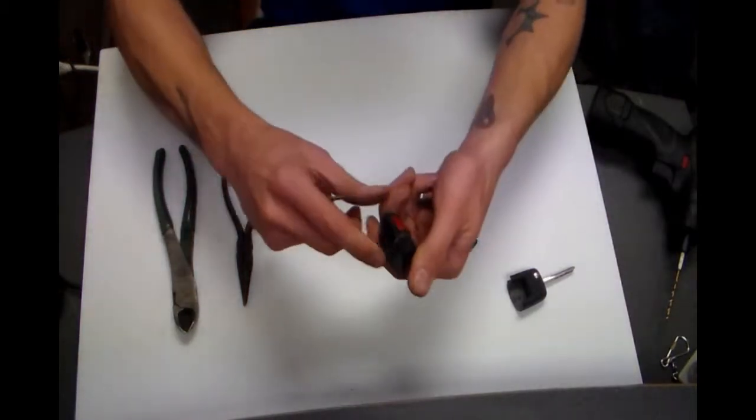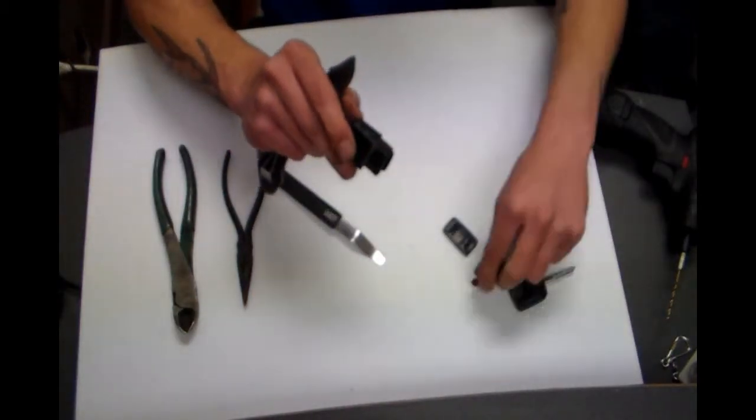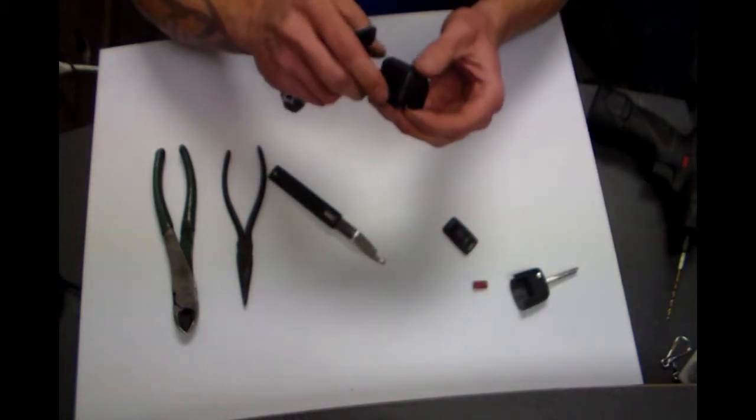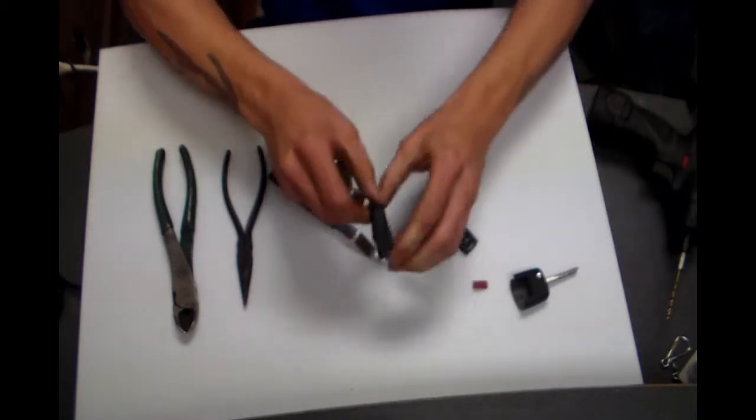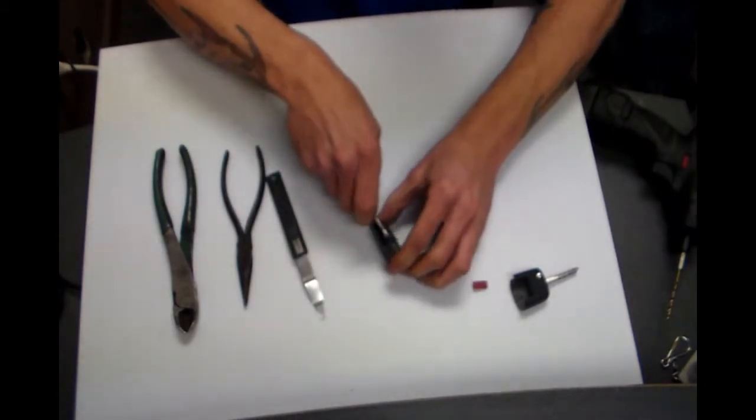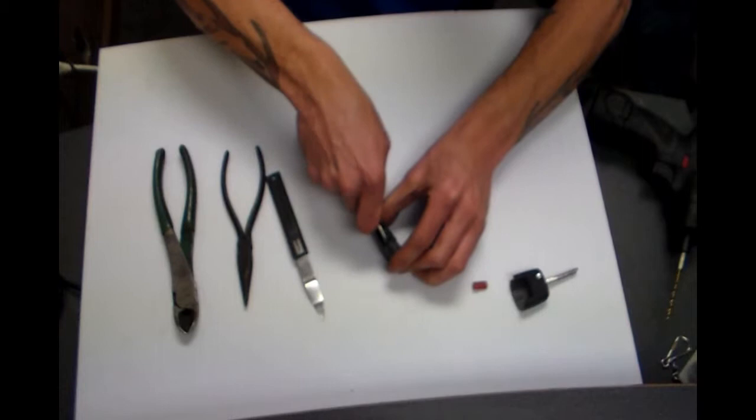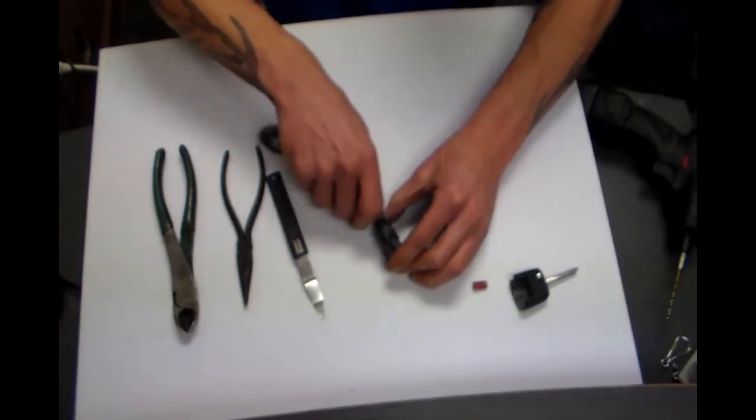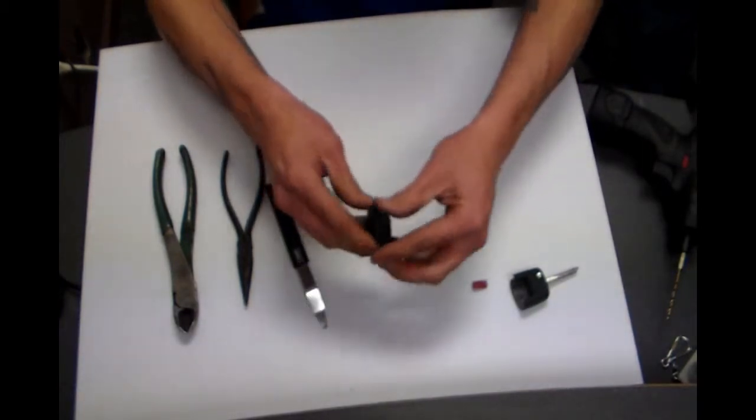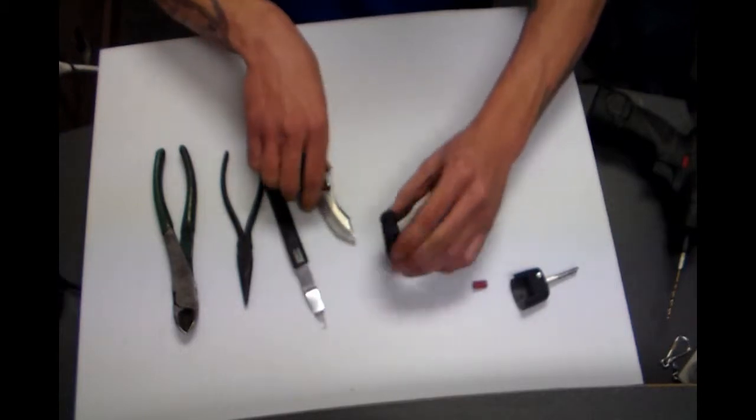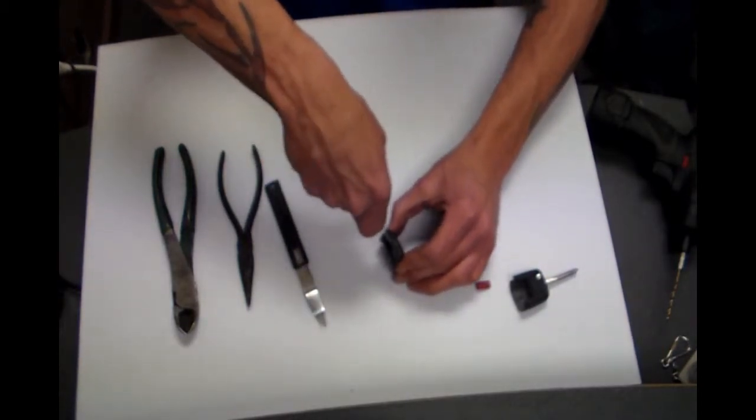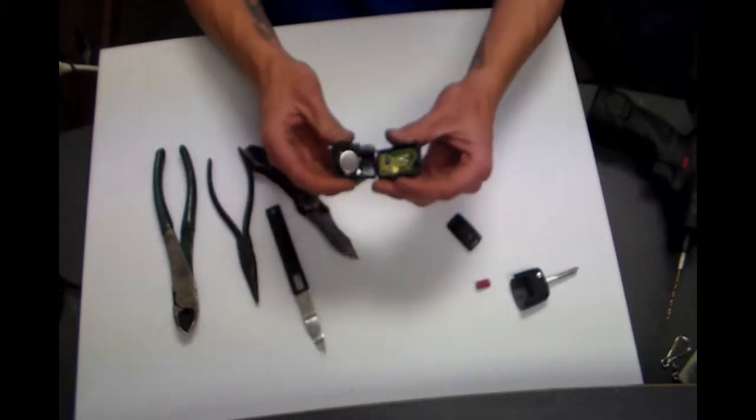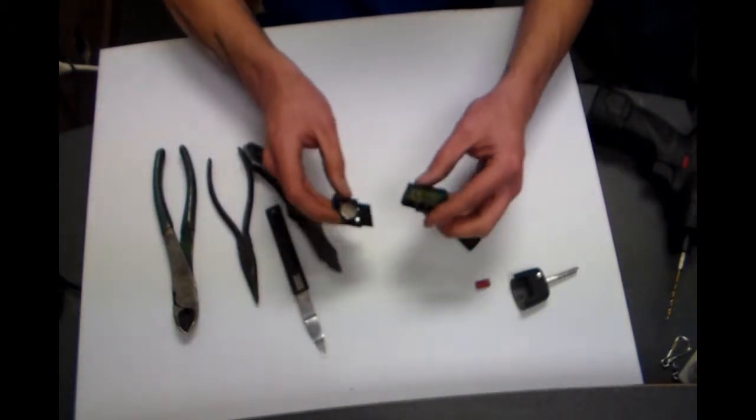I guess if your key still has the panic button, you'll probably be okay to take that out at this time. Yep, that one's been on there for some time. There we go. Now you have access to the battery and the circuit board.